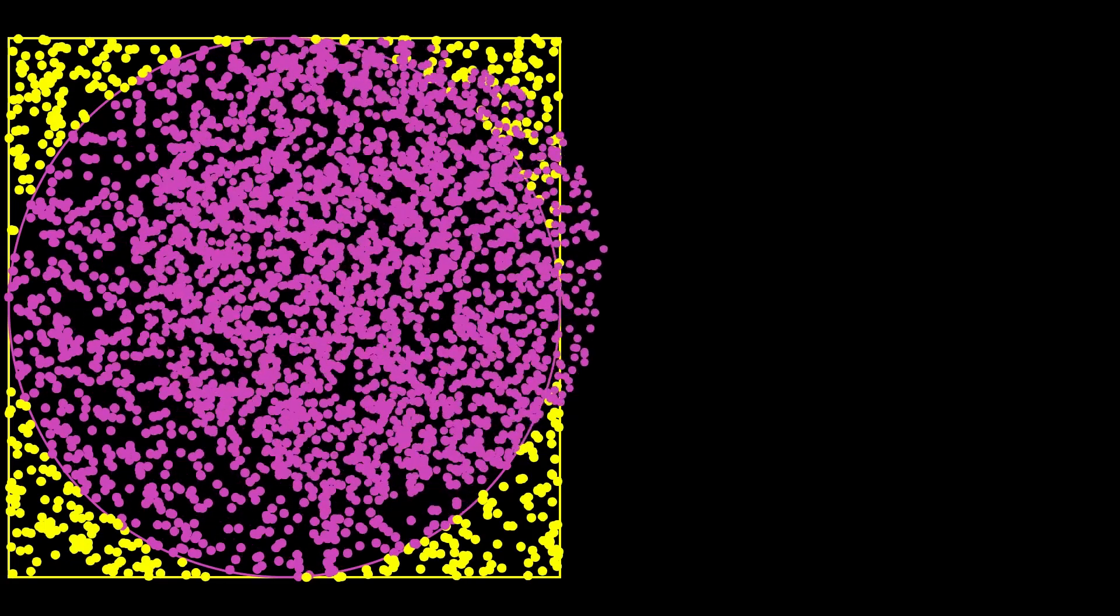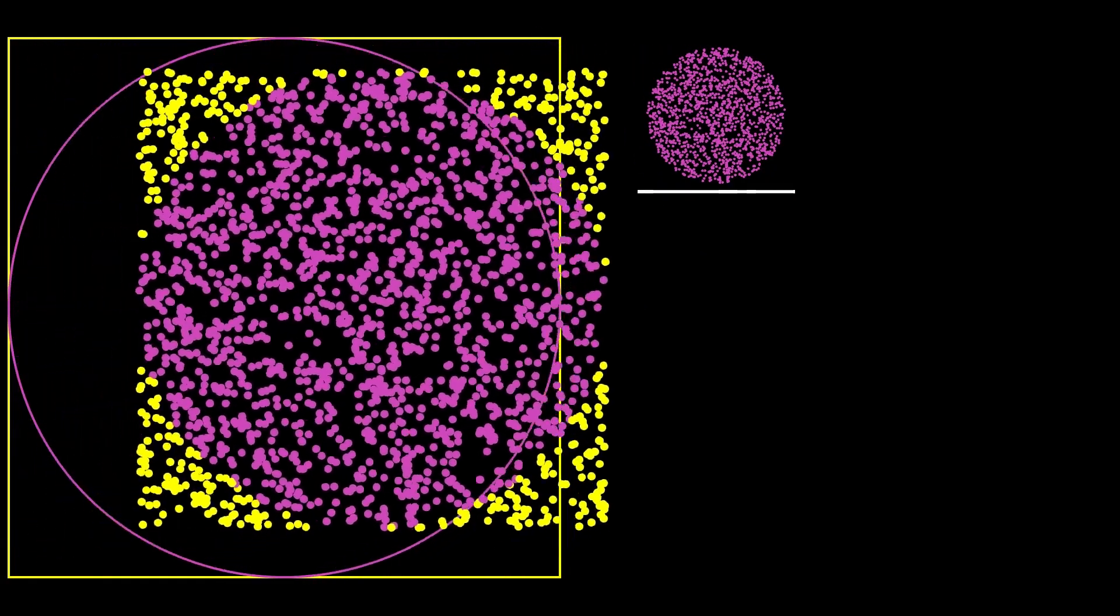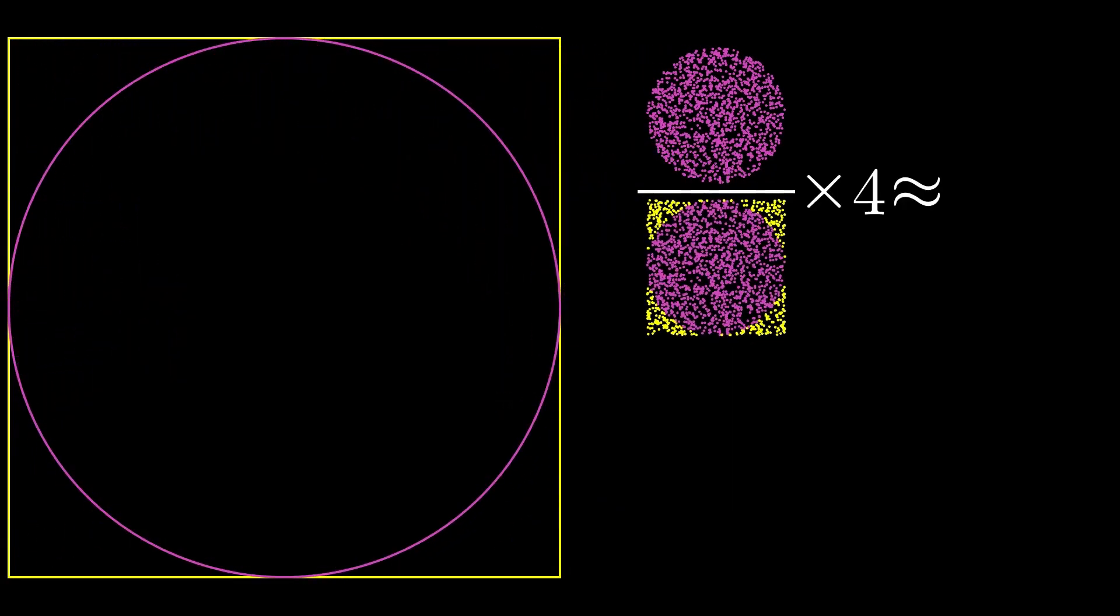Now let's up it to 2,000 dots just to see how close we can get. So we've got the circle divided by the square. Multiply by 4 is about 3.13. So it looks like we're approaching pi.